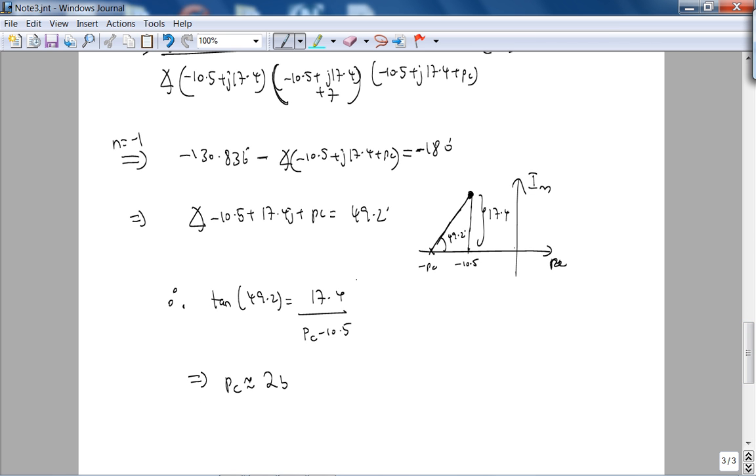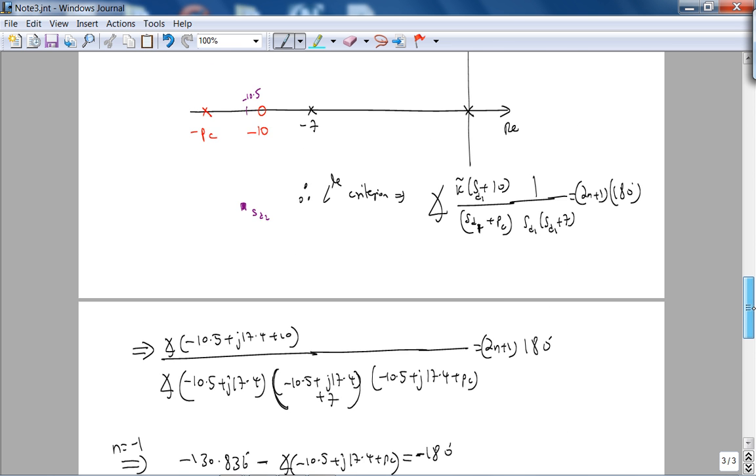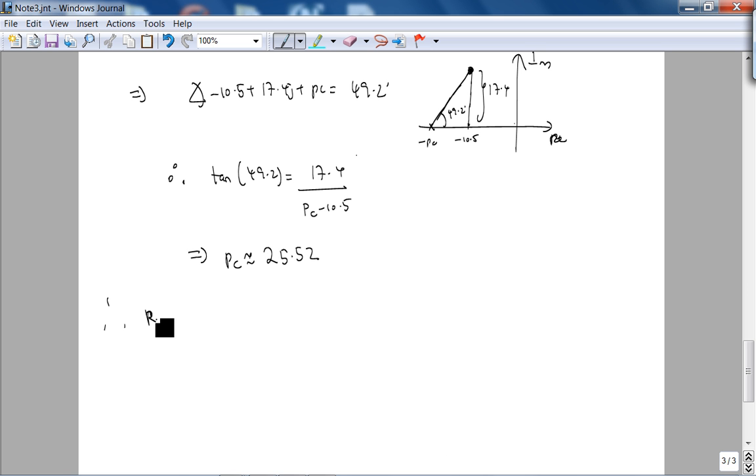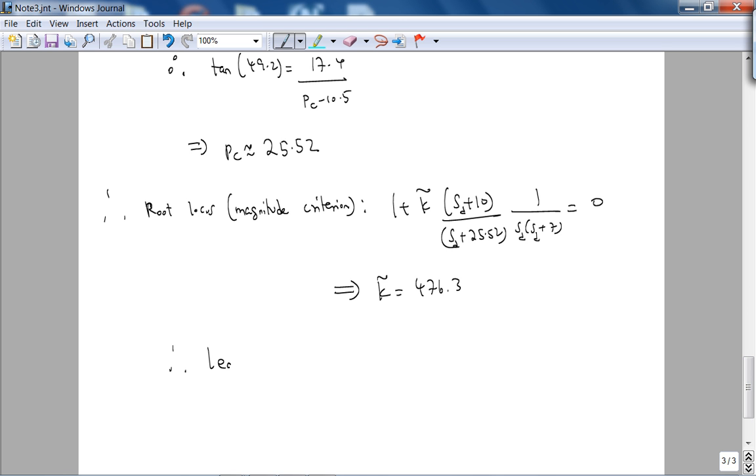Although I made one mistake, I forgot the seven here, so I just added that in. And computing all these phase angles with my calculator I get negative 130.836 degrees minus negative 130.836 degrees minus the phase angle contribution from this compensator pole should be equal to, I made this negative 180, excuse me, so I chose n equals minus 1, so I get a nice acute angle contribution. Looking at this picture, I know this is negative 10.5, I have minus pc, but basically this angle over here I know is 49.2 degrees, and I know this length is 17.4. Therefore by simply using the inverse tangent I can find my pole location. Therefore the tangent of 49.2 is going to be opposite side over adjacent side, so it's going to be 17.4 over pc minus 10.5. Doing this computation quickly, I get pc is approximately 25.52.